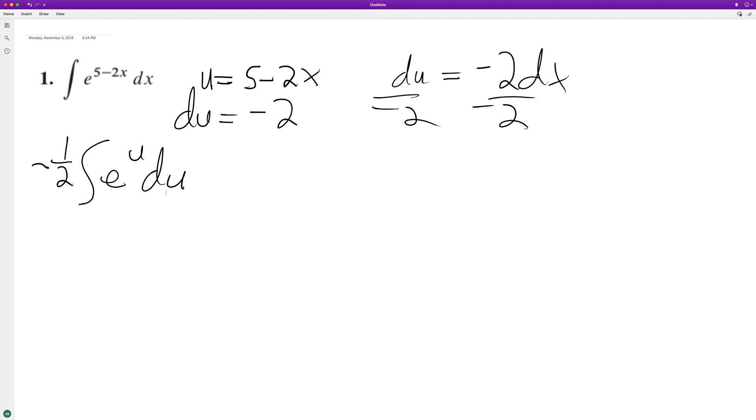And I put it to the left of the integral sign because it's a constant. So when you integrate, it's just going to be e raised to the u. So we just end up with negative 1 half e raised to the u plus C.